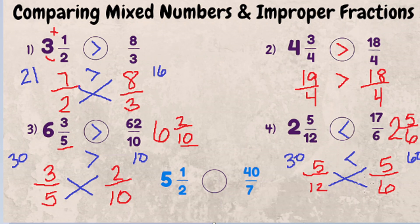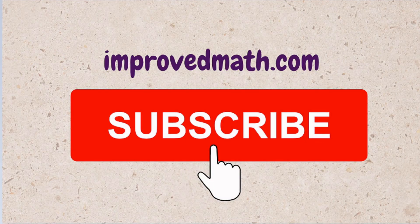Hopefully that was easy to follow. I've left one more example for you to try on your own: five and a half compared to 40 over seven. You can convert it to a mixed number or to an improper fraction — whichever way you want. Leave your answer in the comments. If you want to see more math help videos, subscribe to my channel, give it a thumbs up if you found it helpful, and check out my website at improvedmath.com to download your free printable worksheet.